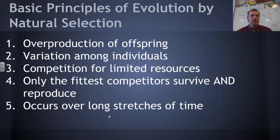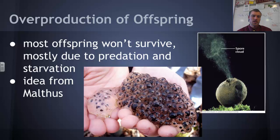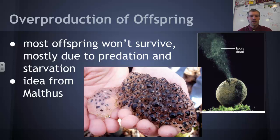So what are the basic principles of evolution by natural selection as laid out by Darwin? Number one: overproduction of offspring. Number two: variation among individuals. Number three: competition for limited resources. Number four: only the fittest competitors survive and reproduce. And finally, it occurs over long stretches of time. The overproduction of offspring is very important because most offspring won't survive — due to being eaten, starvation, or many other reasons. This he took from Malthus: lots of organisms must be produced so that some can survive.